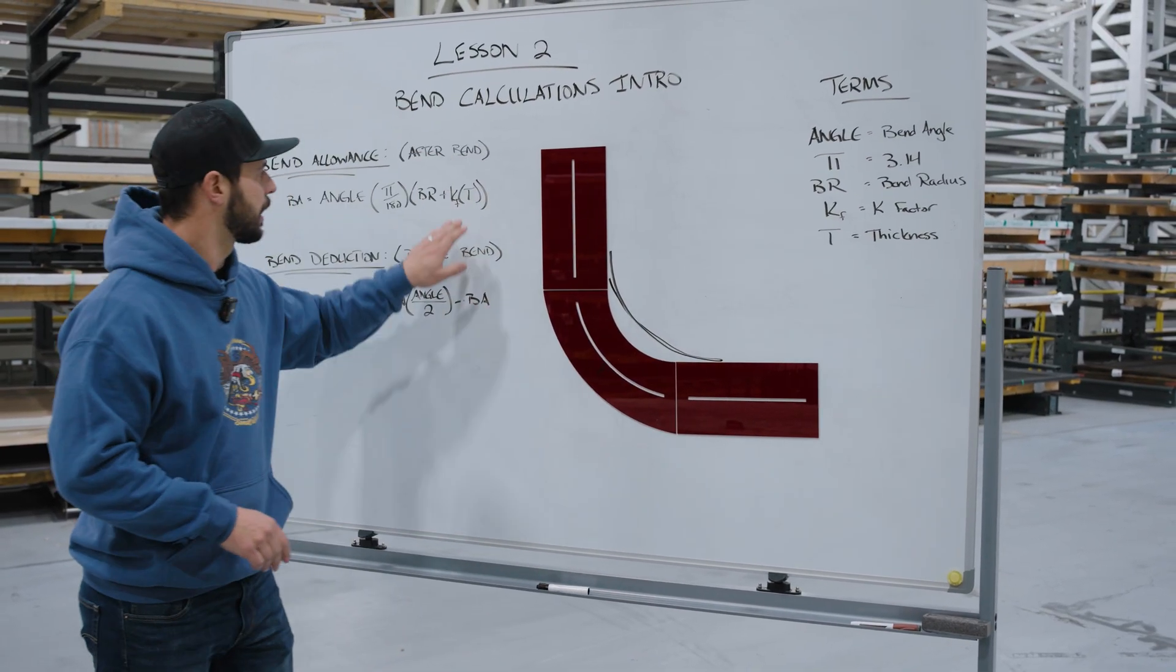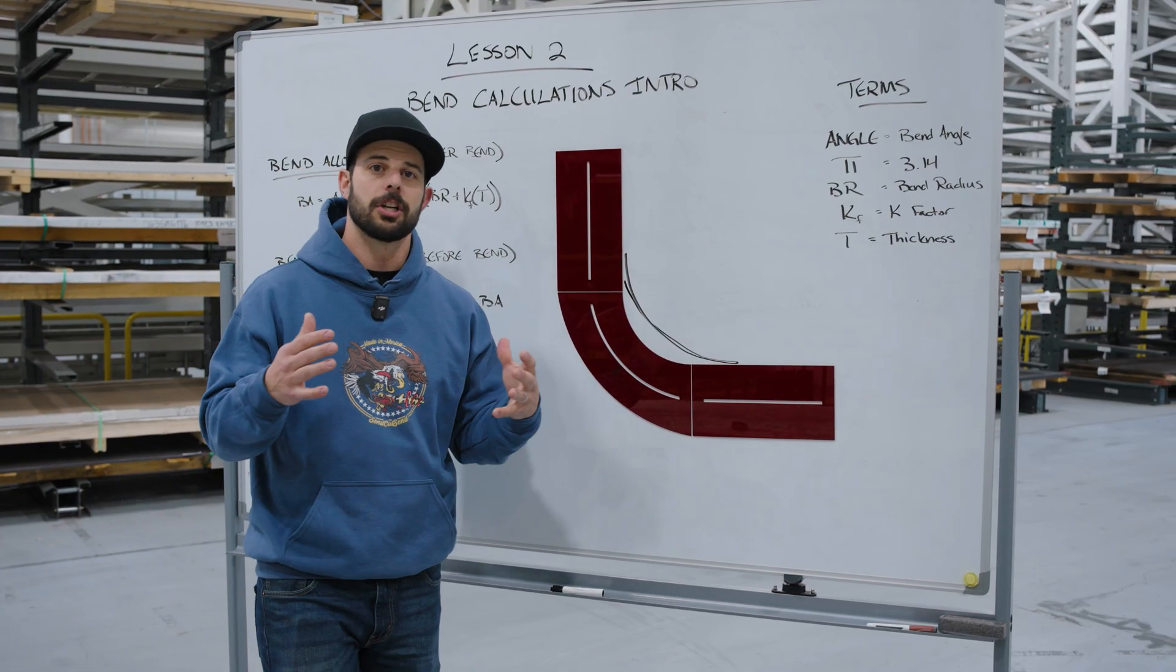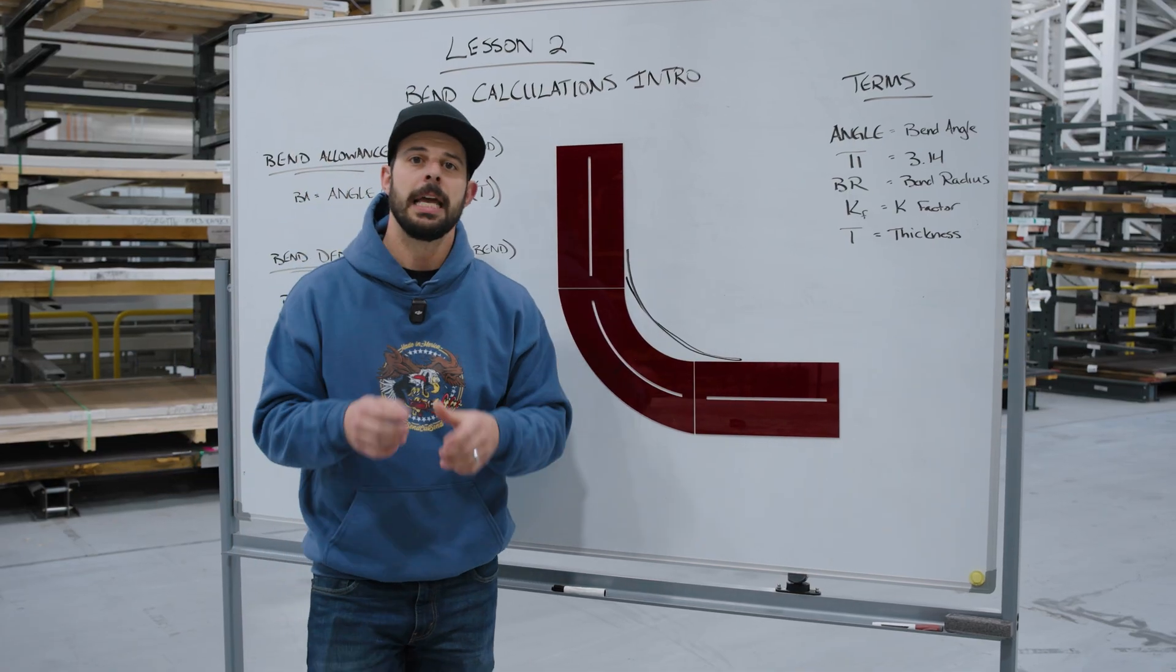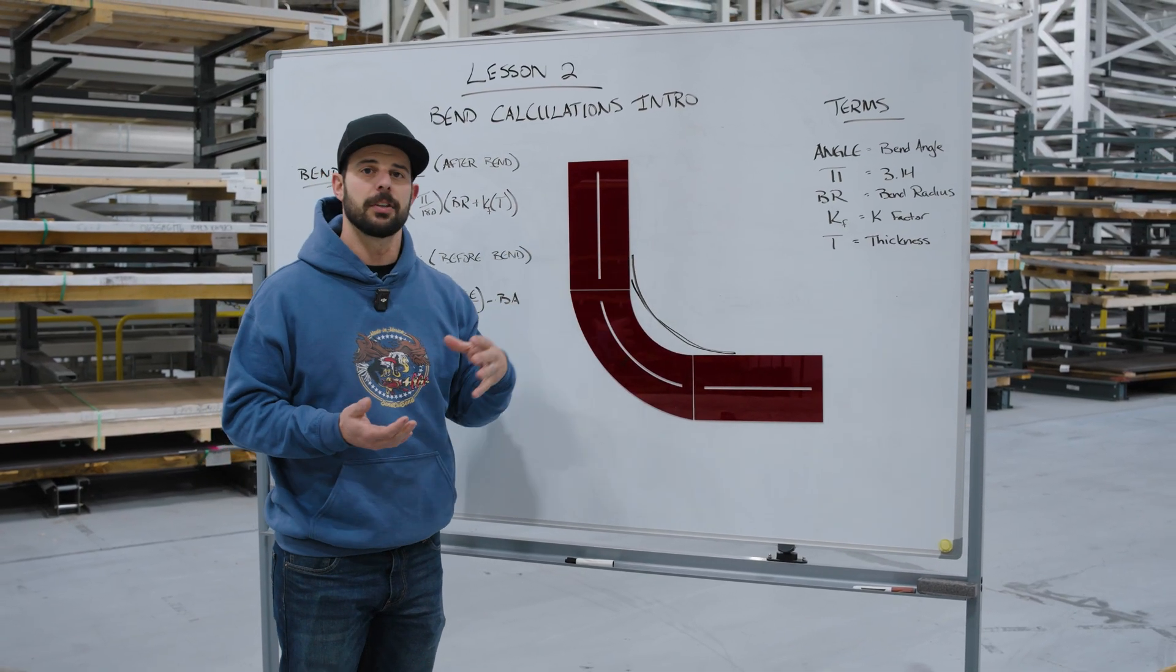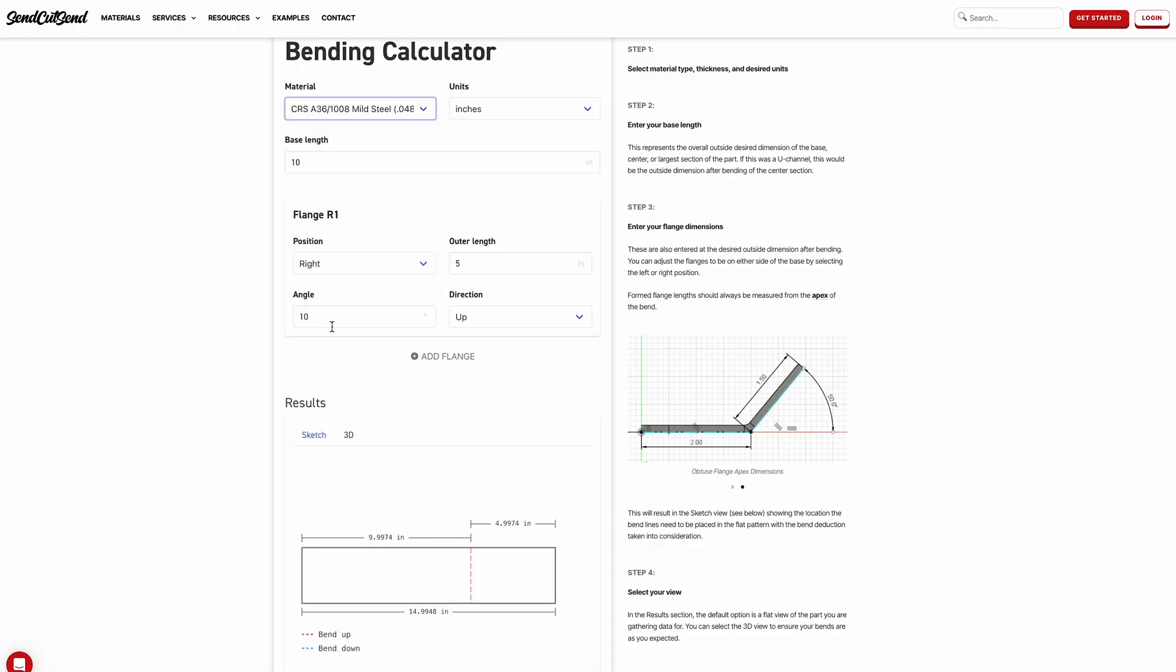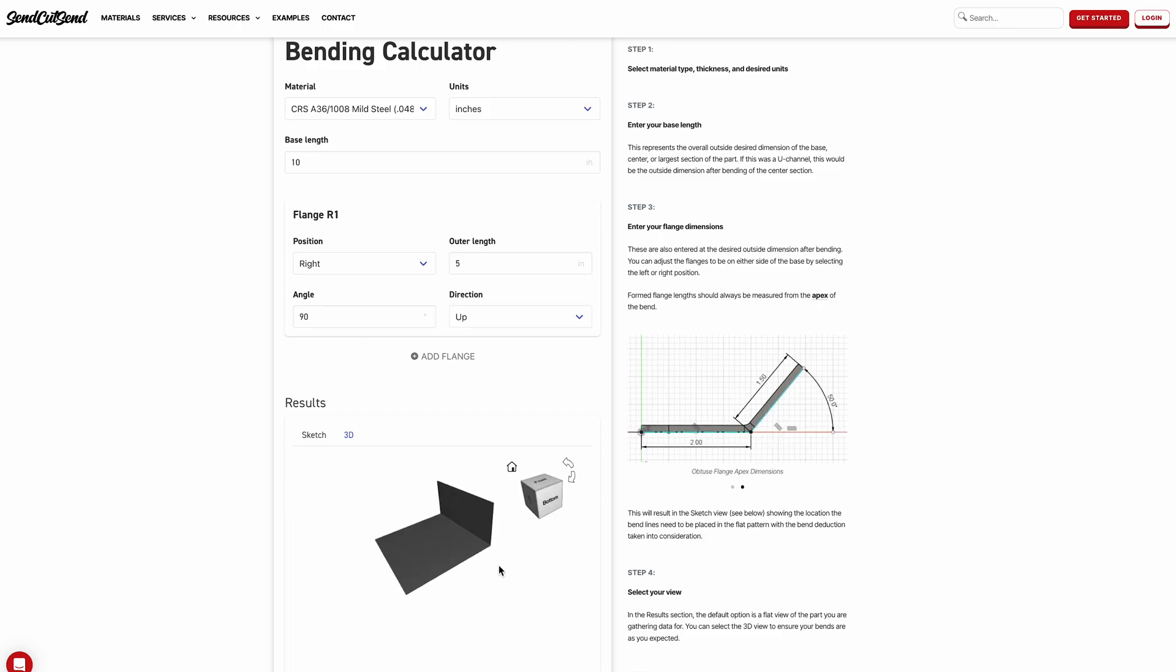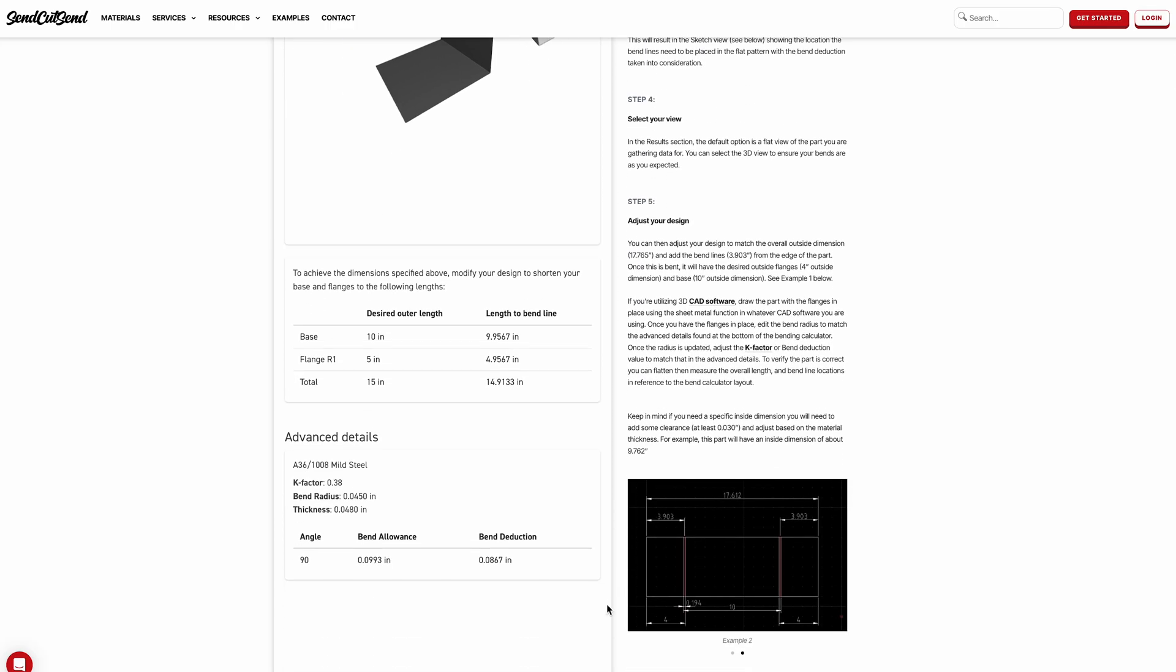With all of these—thickness, k-factor—the best way to see the long-term effects is to play with our bend calculator. There should be a link below. If you go on the website and put in these values on the bend calculator, you can change certain things like the material or bend angle, and you'll see these two calculations. You can see how they change. You'll see an overall part recommendation for those flange lengths you put in, and you'll see those change as well.